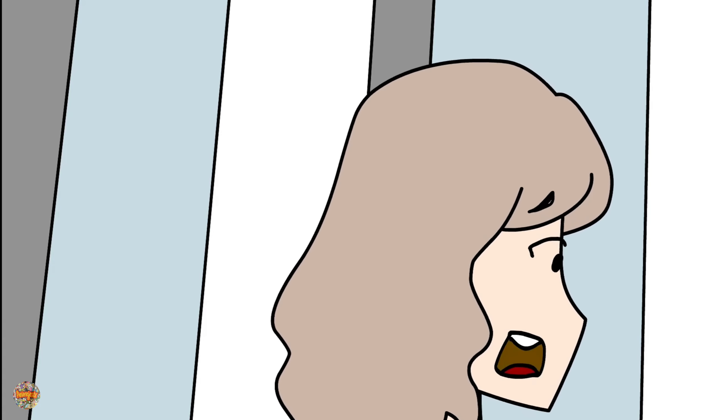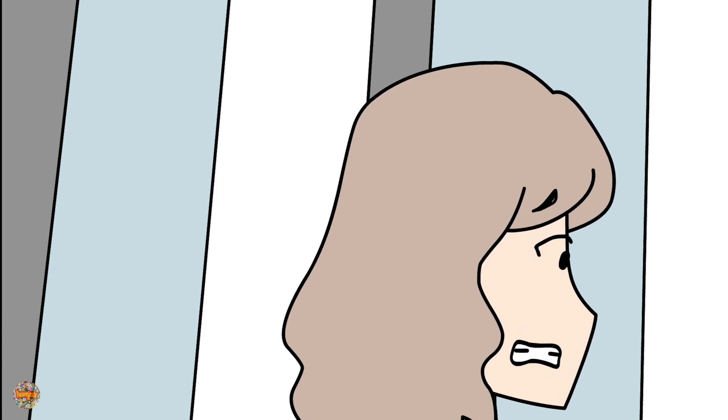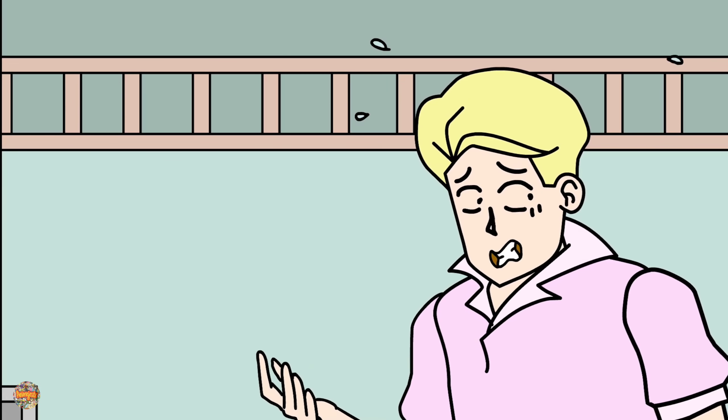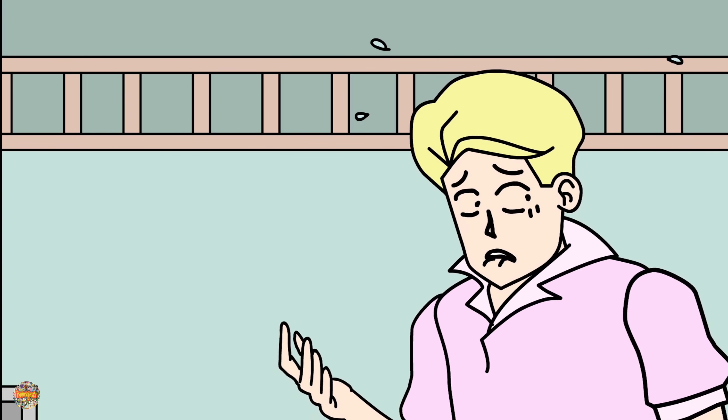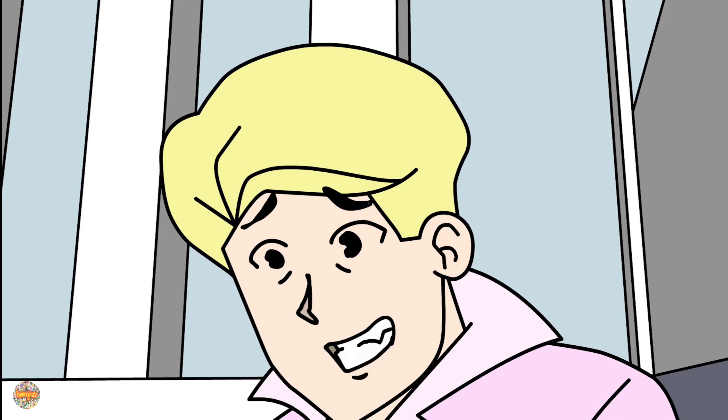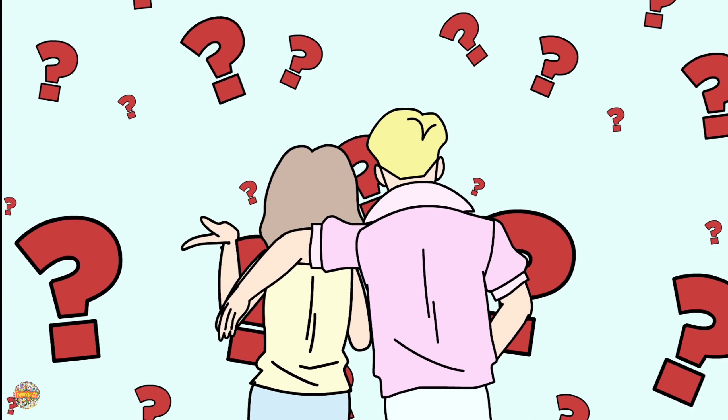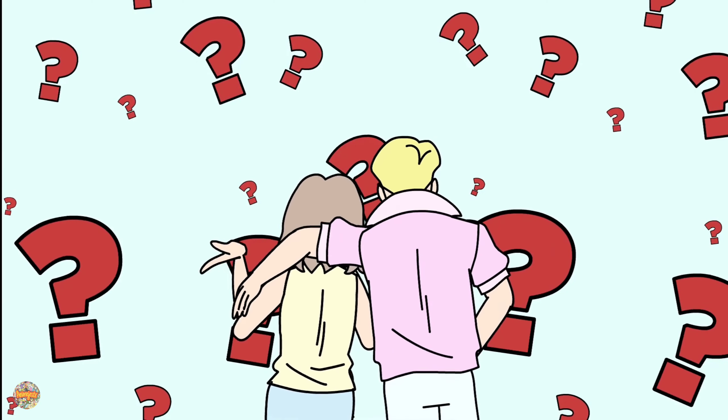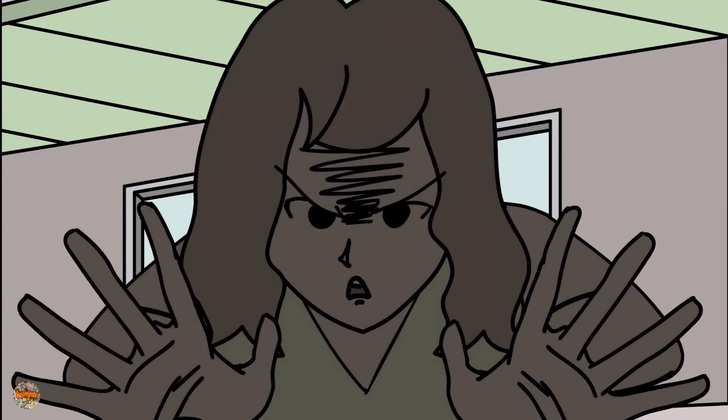The next day, I told Roger that I told my mom I had a boyfriend and that she wanted to meet him. He looked a bit uncomfortable at first, but he agreed. I just have something to do after school. After that, I'll call you and we can go to your house together. I wondered what he had to do, but I decided not to be too inquisitive. I didn't want him to think I was controlling or anything like that.